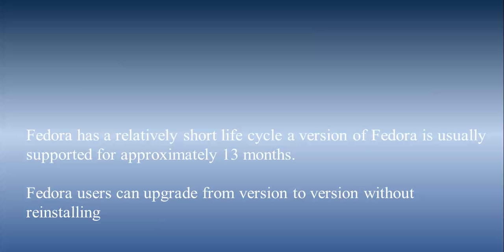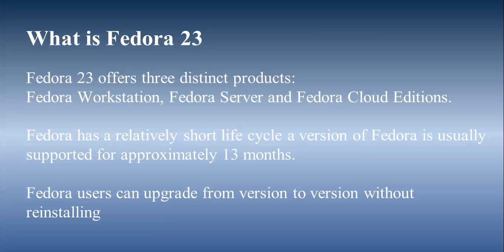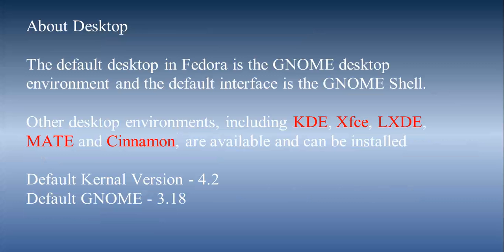Now, what is Fedora 23? There are approximately three types of Fedora: Fedora Workstation, Fedora Server, and Fedora Cloud Editions. This is supported for 13 months only. Fedora users can also upgrade from a previous version without reinstalling.